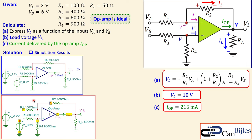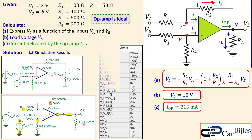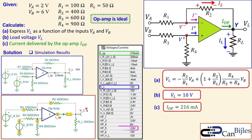A second simulation generates a full table of results for all components. From the table, Iop is 260 milliamps — verified again in a different form — and VL is 10 volts. The node voltage labeled VP5 is 3.6 volts, which matches the voltage divider calculation. The node VP3, corresponding to V−, is also 3.6 volts — again confirming that V+ equals V− due to negative feedback. All calculations are verified.